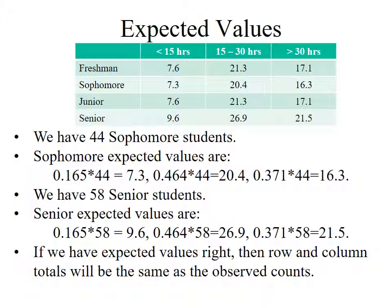Then I do the exact same thing for the others. I have 44 sophomore students, so I multiply by the same proportions: 0.165, 0.464, and 0.371, giving my expected values for sophomores. I had exactly the same number of juniors as freshmen, so I get the same expected values in the junior row. For seniors, I had 58 total: 0.165 times 58 = 9.6, 0.464 times 58 = 26.9, and 0.371 times 58 = 21.5. In each case, I take the row sum and multiply by the proportions in each studying category to get my expected values.